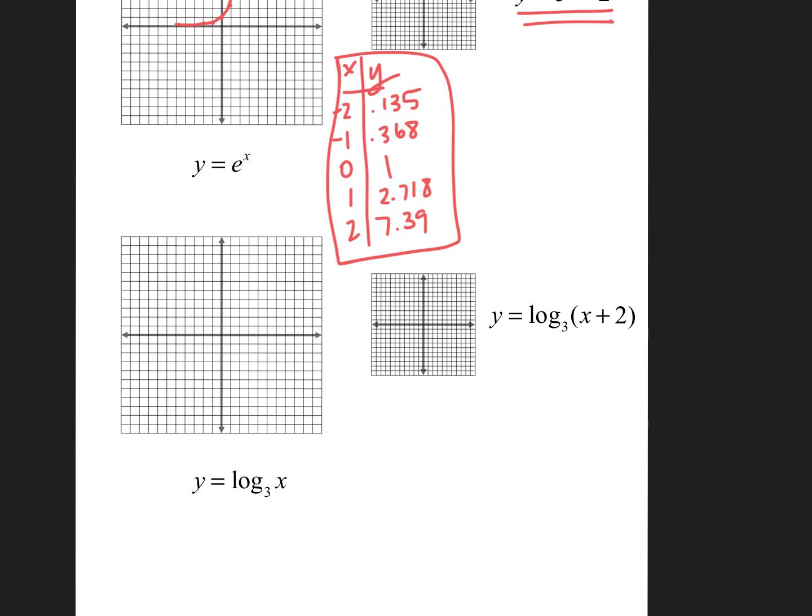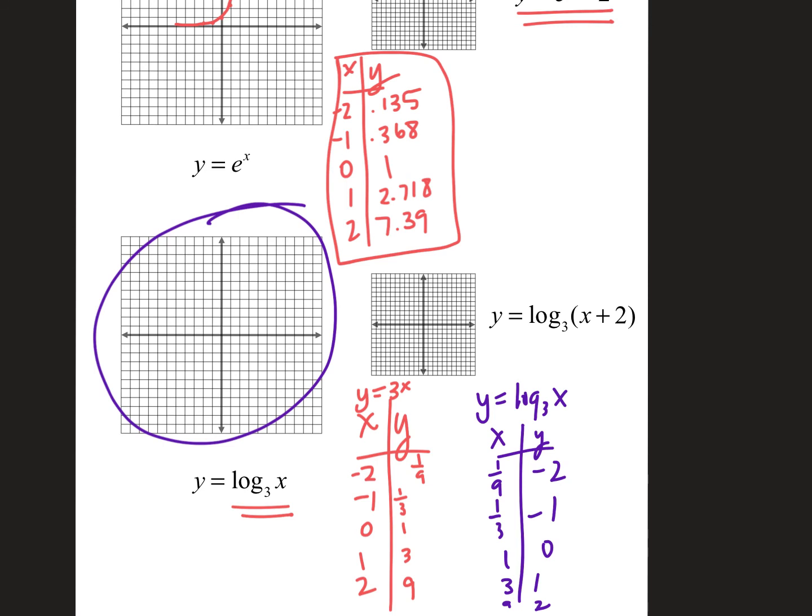And then here, since I've got log base 3 of x, if I was going to graph this, the first thing that I would have to do is to come up with an XY chart for y equals 3 to the x. This would be 1/9 and 1/3 and 1 and 3 and 9. Now if I switch colors, this y equals log base 3 of x, this would be the XY chart for that. It would be the two columns switched. So that would give me this parent graph. Once I've got that parent graph, I would use it here and move this left 2 units.